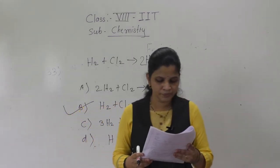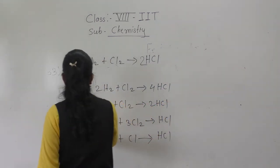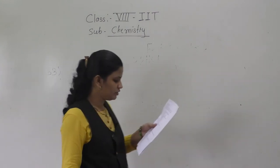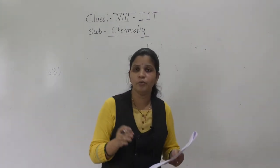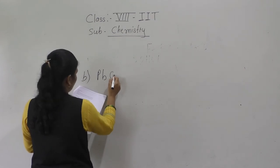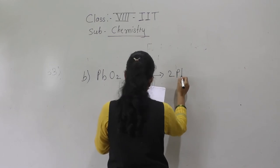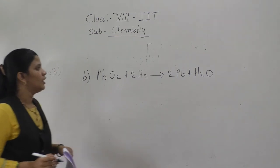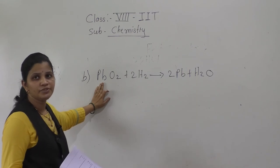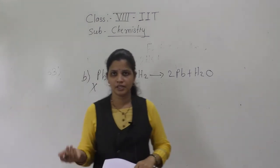Question number 38: which of the following is an unbalanced equation? The unbalanced equation is PbO₂ + 2H₂ → 2Pb + H₂O. Here Pb has 1 atom on the left but 2 on the right — so this is the unbalanced equation.